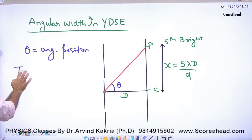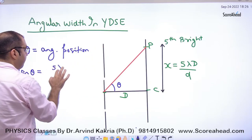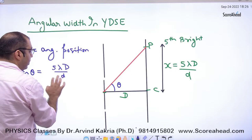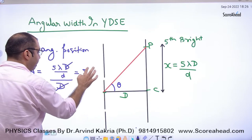So say theta, what will happen? Tan theta is equal to perpendicular 5 lambda d by d divided by, what is this distance? Capital D. So answer what will happen? 5 lambda by d.